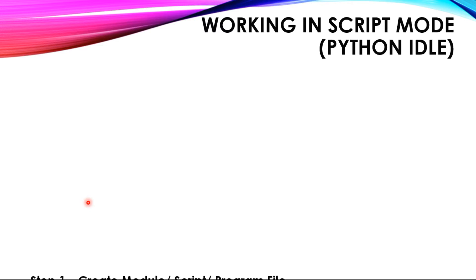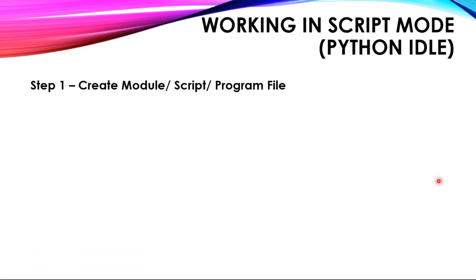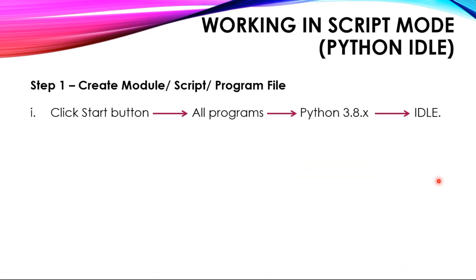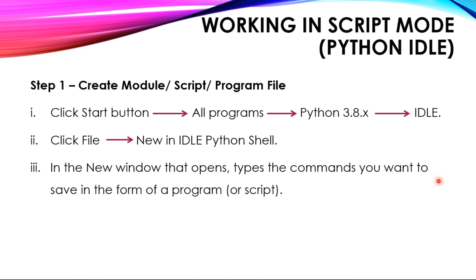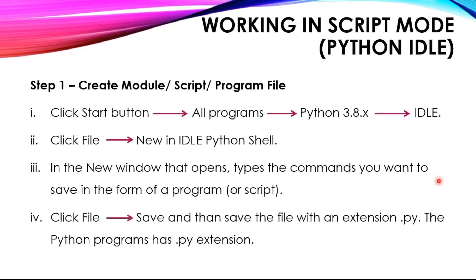Now we will see working with Script mode. Step 1: create a module, script, or program file. How to create a program file? Click on the Start button, go to All Programs, go to Python, open IDLE, then click on the File tab and click on New. A new window will appear. Type all the commands that you want to save in the program. And lastly, save the file. Keep in mind that whenever you save a Python program, you have to give it the extension .py.